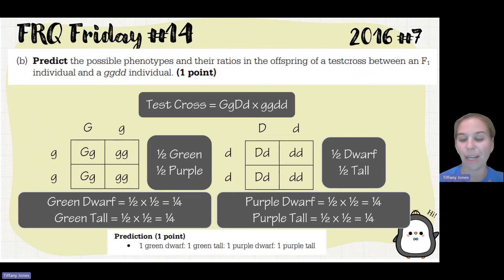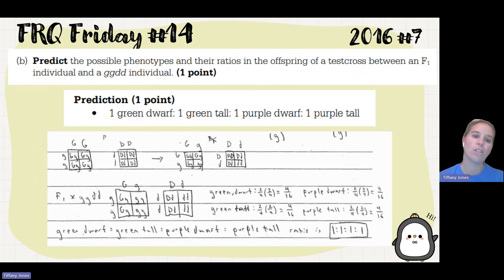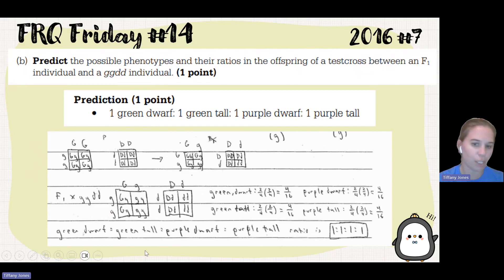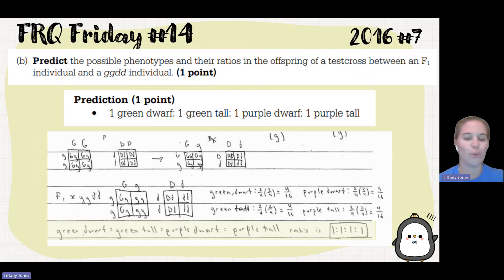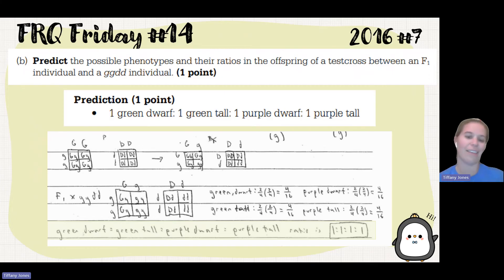Remember to write this in a complete sentence. That is what our students did — they showed their Punnett squares. The key thing they needed to get to was the phenotypes with the ratio. Since students were having trouble writing in complete sentences, they may have received partial credit on the form.